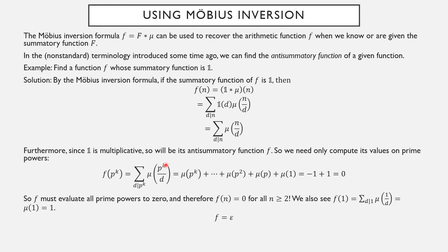We could have seen this a bit earlier: the sum over the factors of n of µ evaluated on cofactors is equivalent to listing cofactors directly, so we could have recognized this as the summatory function of µ — which we computed on the previous slide to be the epsilon function. Overall, the function whose summatory function is the one function must be the epsilon function.